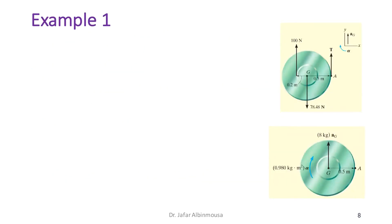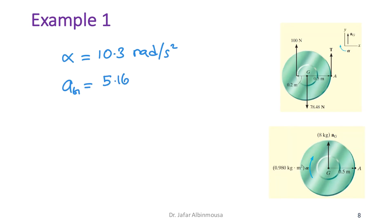Solving the three equations gives α = 10.3 rad/s², a_G = 5.16 m/s², and tension T = 19.8 N.